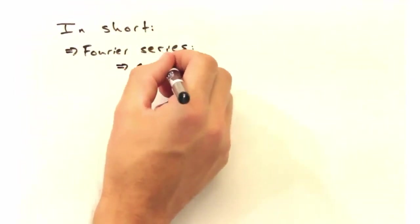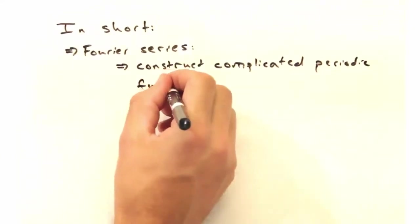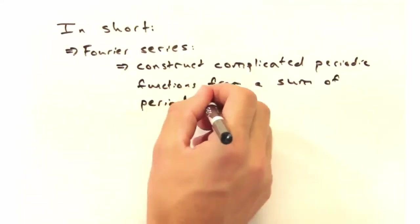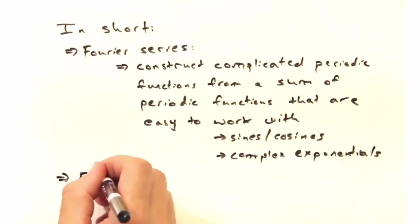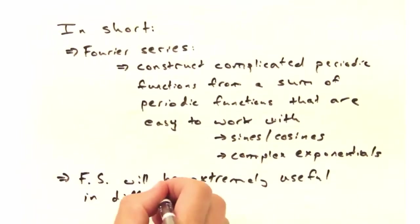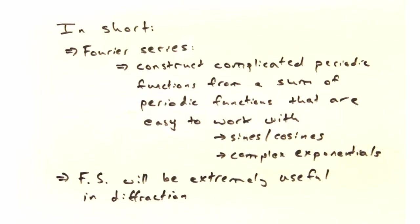So in short, a Fourier series is a way to construct something complicated with periodic functions that are easy to work with, like sines and cosines or complex exponentials. We'll be using them quite a bit in diffraction, so it'd be good for you to get a good grasp on them.